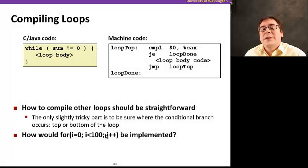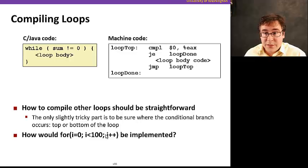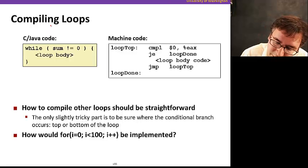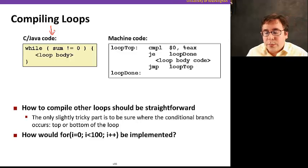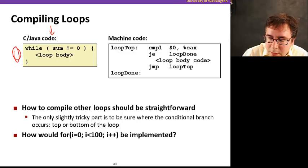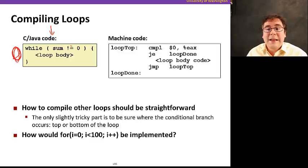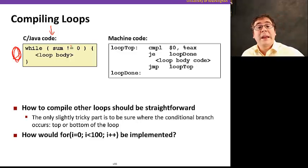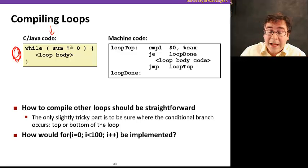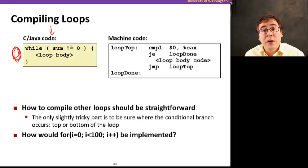Hello again. Now that we know how to implement conditionals in assembly, let's see how we implement loops, which is going to involve conditionals. Here I'm showing you a simple example of a while loop that keeps executing the loop body as long as the condition holds. In this case, the condition is while sum is not equal to zero, it keeps executing. And when sum is no longer not equal to zero, the loop is going to stop.